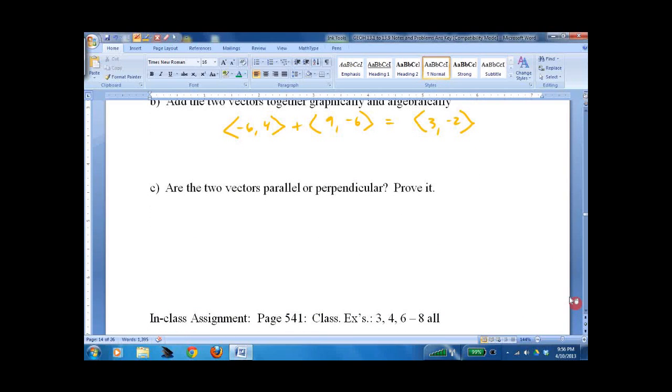Are the two vectors parallel or perpendicular? And hopefully you remember this from either your algebra or recent lesson. You have to find the slope of the vector. And the slope is change in y over change in x. And the vector is written in change in y. So you'd get negative 6 over 4, equals negative 3 halves. Or the other one, change in y over change in x, is 9 over negative 6, is negative 3 halves. So parallel.